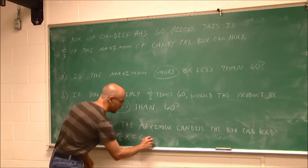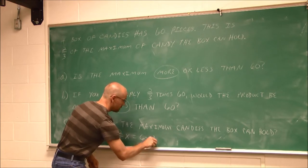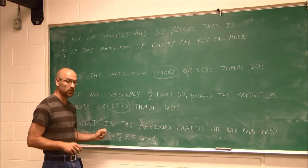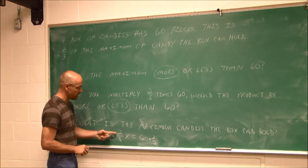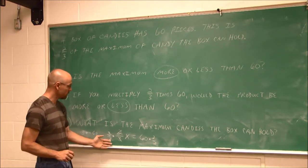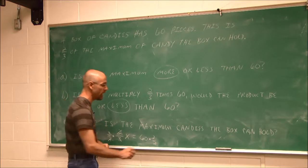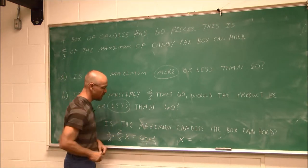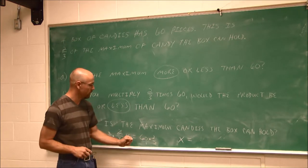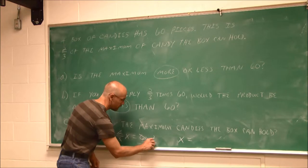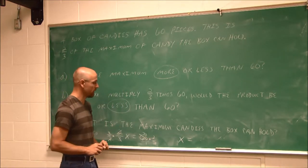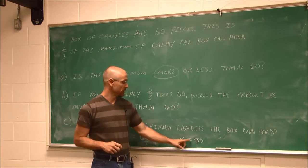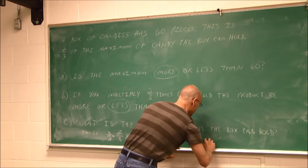What I do to one side of an equation, I have to do to the other. So I have 3 halves times 2 thirds x equals 60 times 3 halves. The 3 on top cancels the 3 on the bottom, and the 2 on top cancels the 2 on the bottom, leaving 1x. Then 60 times 3 halves: thinking of 60 as over 1, I can reduce 60 over 2 — half of 60 is 30 — so 30 times 3 is 90. The maximum number of candies the box can hold is 90.